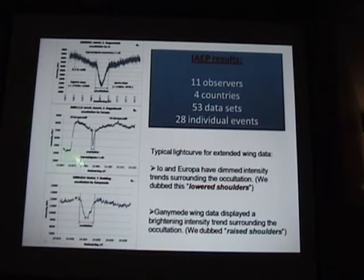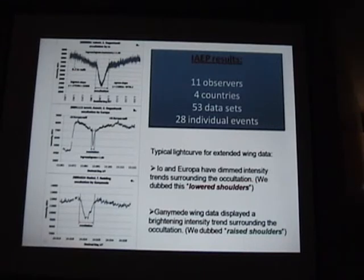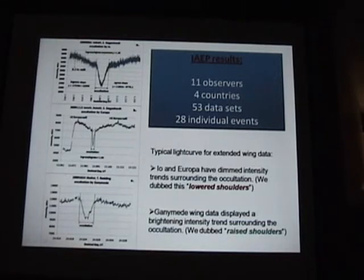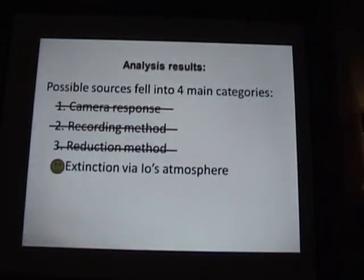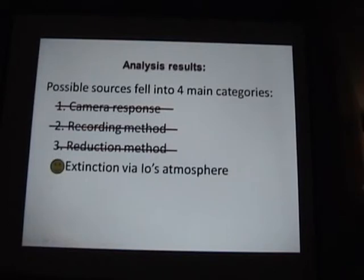Ganymede events had what I call raised shoulders — an anomalous brightening on each side instead of a dimming on each side of the occultation. One event also showed IO emerging from Jupiter's shadow just before the occultation, making it a sort of double event. After the series of experiments, it clearly became camera independent, recording method independent, and reduction method independent. The only thing that repeated in all of our experiments was extinction theory.